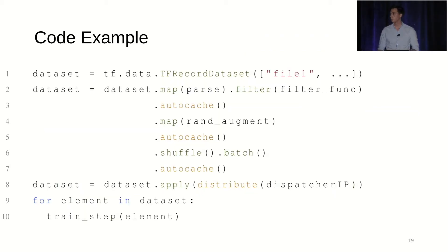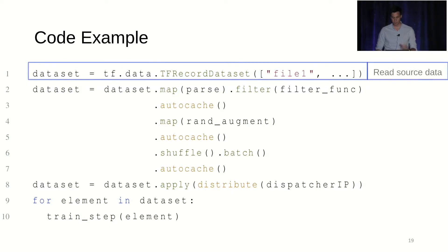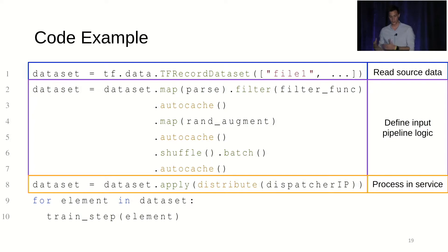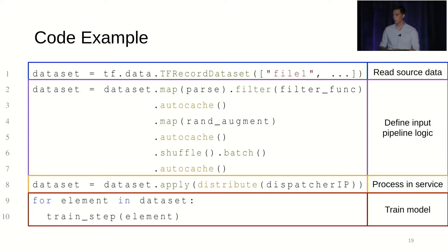How do you use this in code? If you're familiar with TF Data or even Spark, you'll be right at home — we don't augment the API too much. We start by reading some data, which produces a dataset object. On top of this we define the input pipeline logic consisting of transformations and auto-cache ops. We then request that this input pipeline gets processed in the service via the distribute operation rather than locally, and in a Pythonic manner one iterates over the dataset to obtain batches for the model.